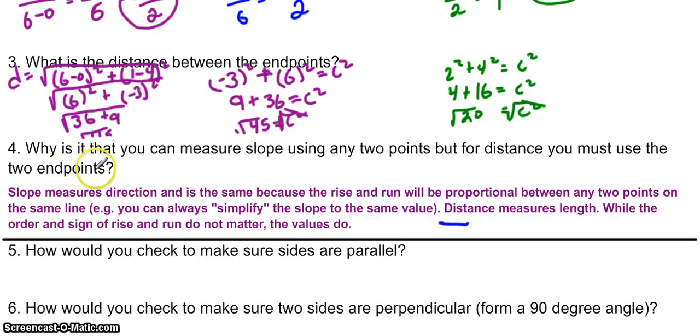And that is how we can measure slope using any 2 points, but for distance we have to use the end points.